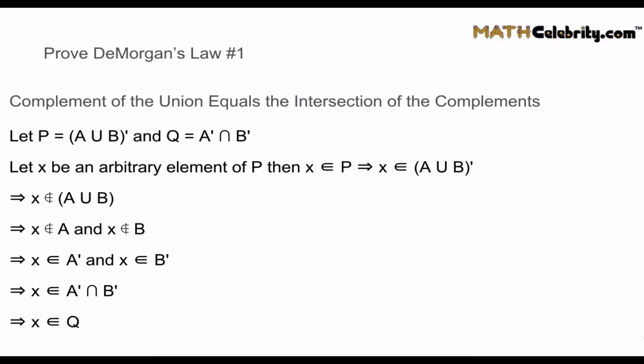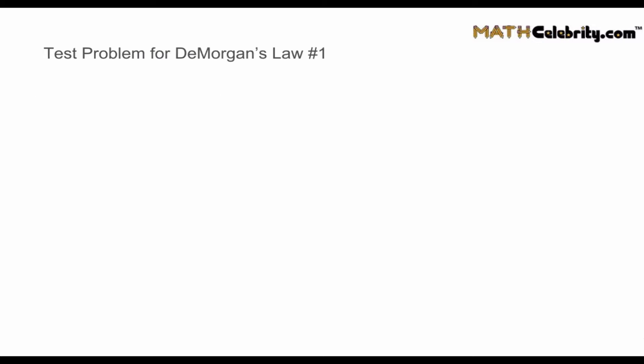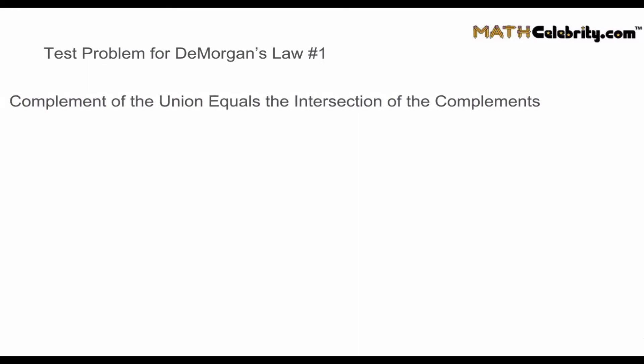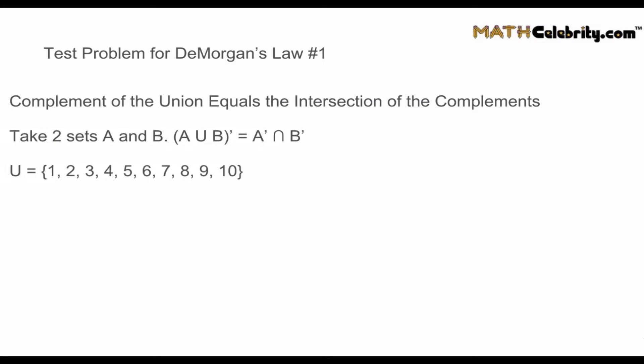Now let's look at a real-world application of the first DeMorgan's Law with a test problem. The complement of the union equals the intersection of the complements. Let the universal set U be all numbers from 1 to 10. We'll define A as {1, 2, 3, 4, 5} and B as {2, 4, 6}.